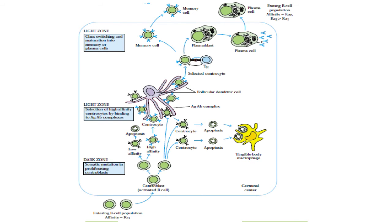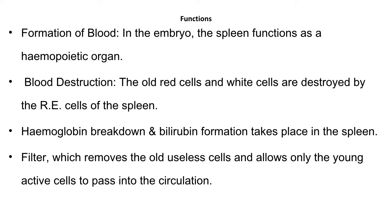Now let us see the different functions of the spleen. One function is the formation of blood, which usually occurs in the bone marrow, but in the embryonic stage, the spleen functions as the hematopoietic organ. Another function is the degradation or destruction of old blood cells — that is the RBCs as well as WBCs that are old, have completed their lifespan, or have been damaged — and these are destroyed by the reticular endothelial cells, mainly the macrophages present in the spleen.